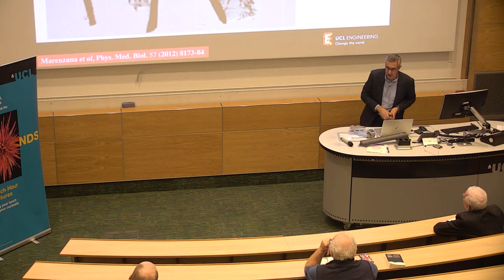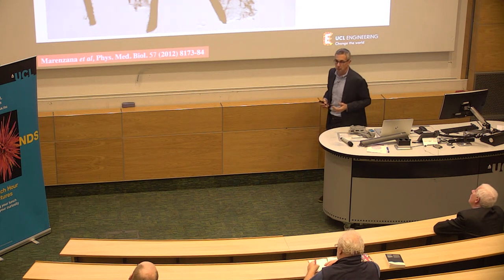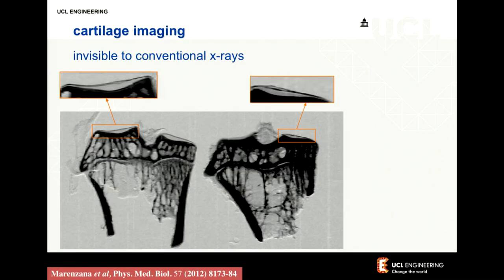Another thing we can see is cartilage, which is invisible to conventional x-rays — people use MRI instead, which is a fantastic technology but expensive, takes a long time, and not all hospitals have it. The idea we have is, in the long term, to deliver a soft tissue sensitivity of MRI with the cost, speed, and high spatial resolution of x-rays. So I'll tell you a couple more technical things and then show you how these additional findings enabled us to develop new applications.